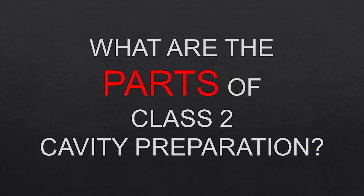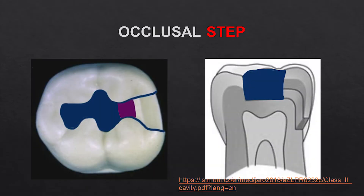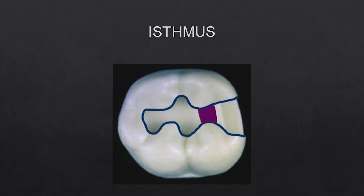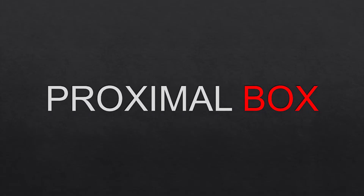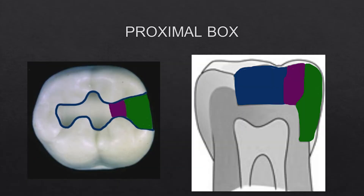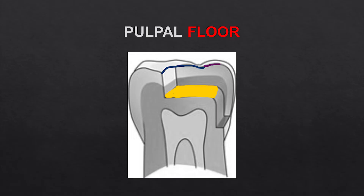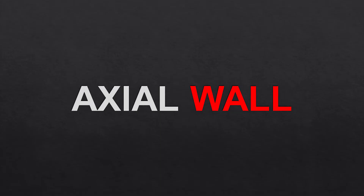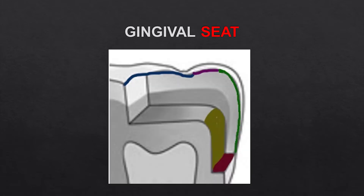Now let's understand the parts of class 2 cavity preparation. The first part is called the occlusal step — not occlusal box — highlighted in dark blue in the picture. The second part is the isthmus, highlighted in purple. The isthmus is the narrowest portion and joins the occlusal step with the third part, the proximal box, highlighted in green. Other important landmarks include the pulpal floor, highlighted in yellow, and the axial wall — a wall parallel to the long axis of the tooth. The gingival seat should not be called the gingival floor.